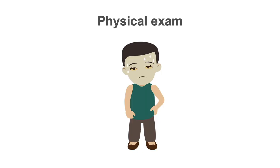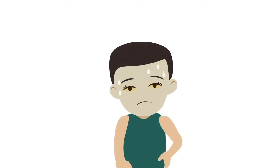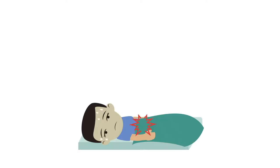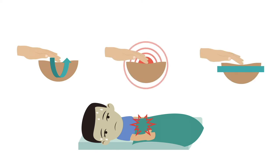Now let's work up a patient with pancreatitis. On observation, the patient with acute pancreatitis will be ill-appearing. The patient can also have scleral icterus, which is yellowing of the eyes secondary to obstructive jaundice from gallstones or edema of the pancreatic head. On abdominal palpation, the patient will often have mild or exquisite epigastric pain. In more severe cases, the patient may present with diffuse abdominal pain and peritoneal signs, such as guarding, rebound tenderness, and abdominal rigidity.